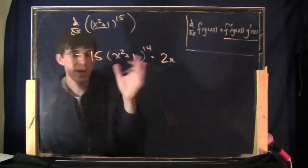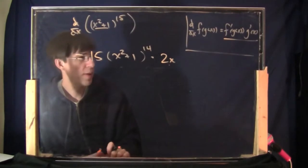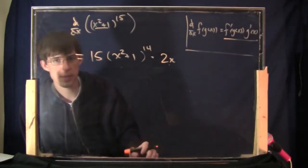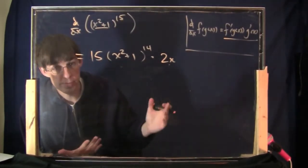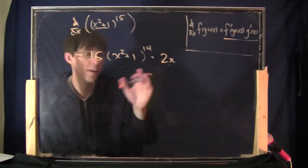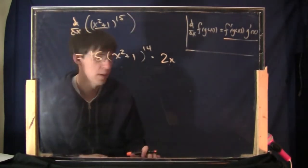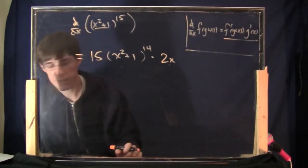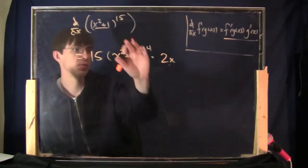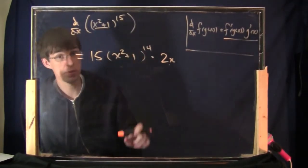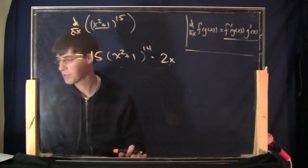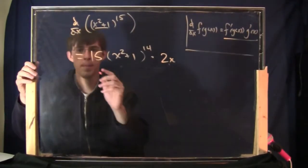You could try to simplify that if you want — you could combine the 2 and the 15 because of the multiplication, giving 30. But this is not a class about whether you know how to multiply 2 times 15; it's a class about whether you know how to do the derivative. That's the important step — that's your answer. Let's try a couple more.